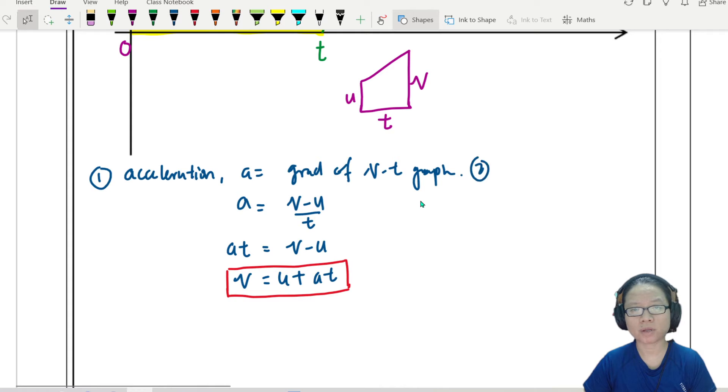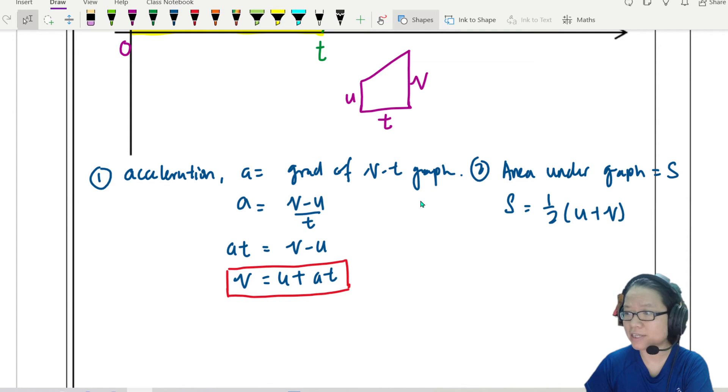So I can now form my second equation already just by looking for the area of this trapezium. So number two, what I would say is area under the graph is equal to s. So from here, s will be equal to half u plus v times t. This one is your second equation. Very nice.